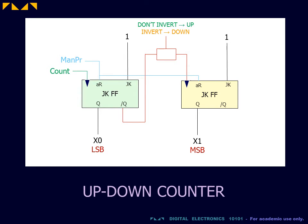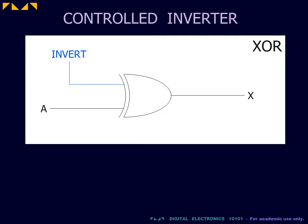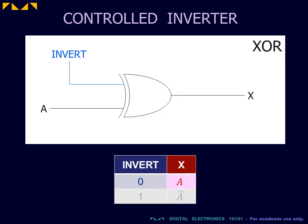Thus, for the up-down counter, we need to place a device on this line which we can controllably invert. Controlled inversion is implemented using an XOR gate. Seen as a controlled inverter, when the invert control input is 0, the output X is the same as the input A.